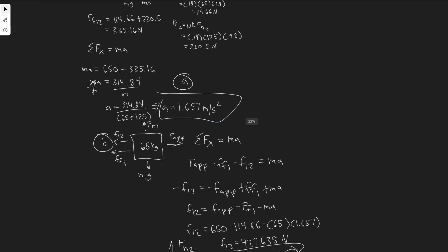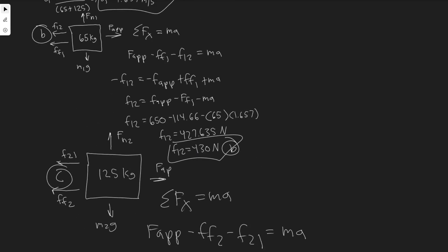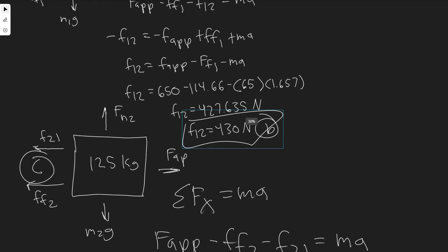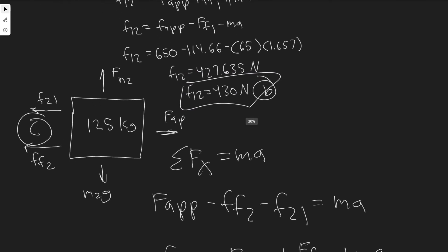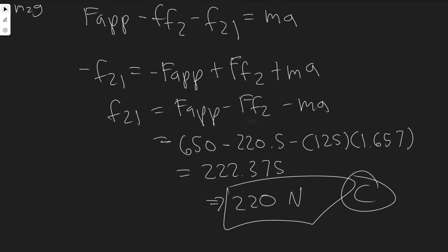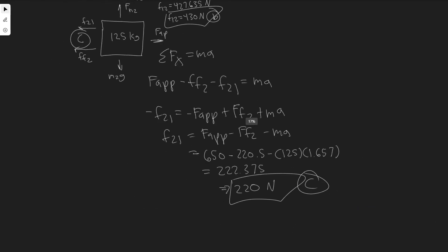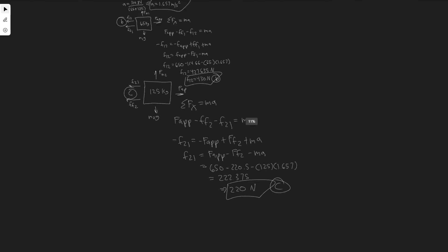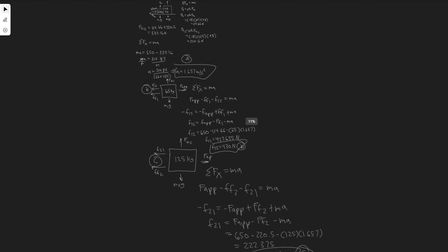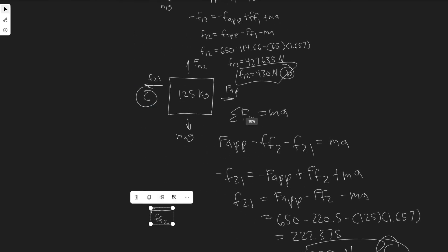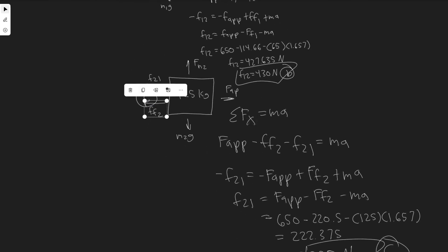So to summarize: the acceleration of the system is 1.657 m/s² for part A; the contact force with the original crate arrangement is approximately 430 Newtons for part B; and with the crates reversed, the contact force is approximately 220 Newtons for part C. Hopefully you found this useful.